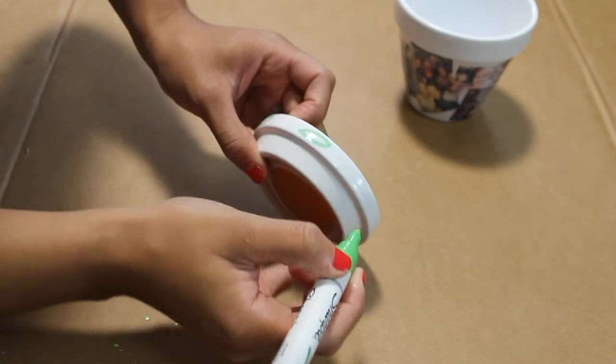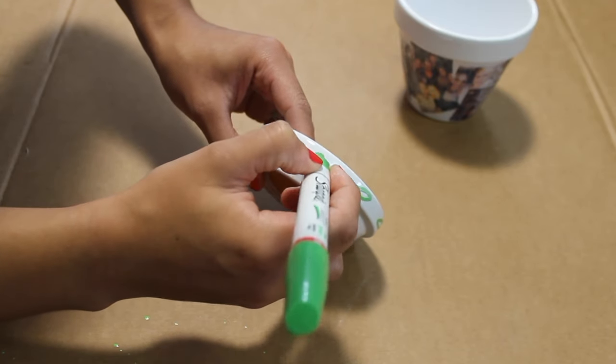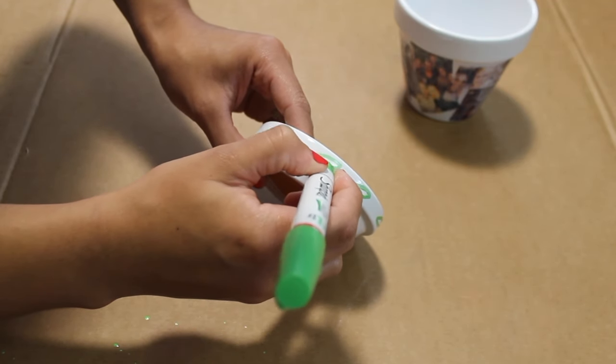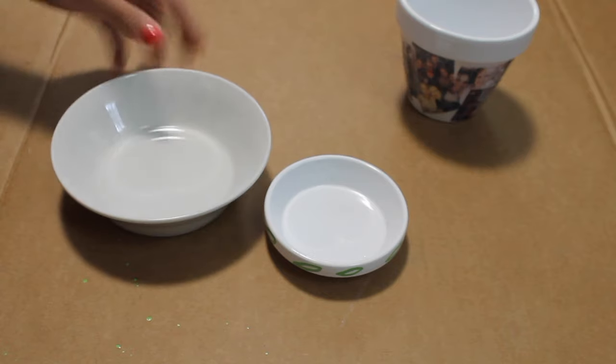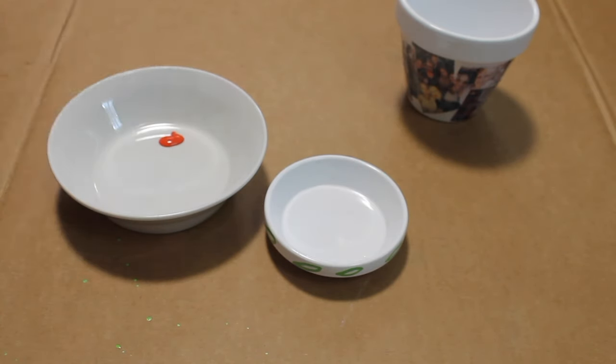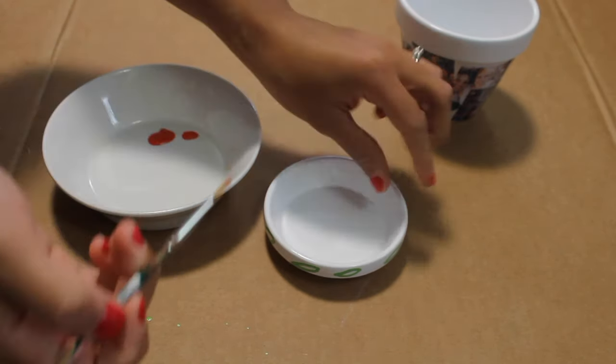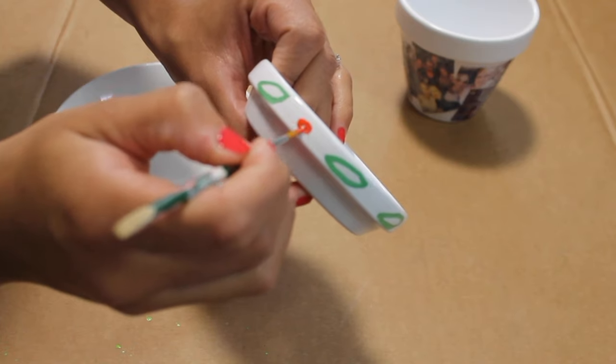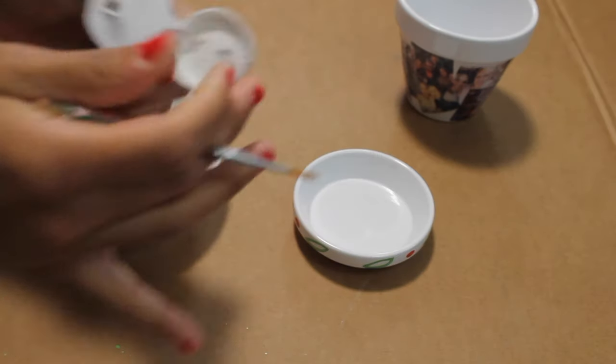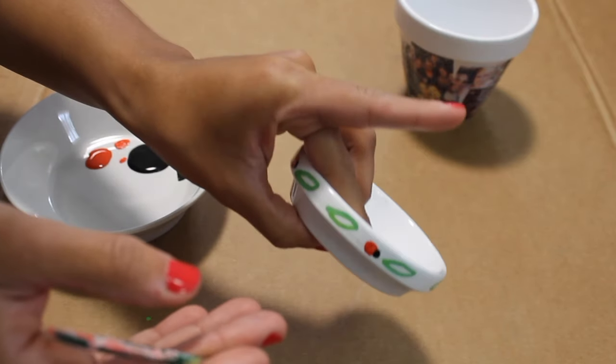And in the meantime, while this is drying, I'm going to work on the base. Now around the bottom, I decide to use this oil-based paint, Sharpie. And I'm going to draw little leaves. So you've got to shake it up. And let's just start drawing. Oh, this comes out thick. It doesn't have to come out perfect.